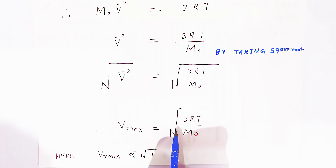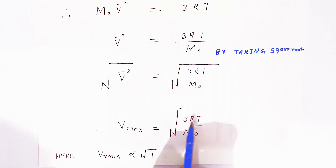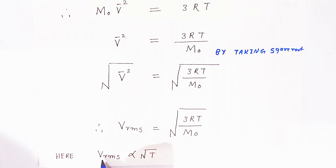That means this velocity is nothing but proportional to the square root of T. Therefore, RMS velocity is directly proportional to √T.